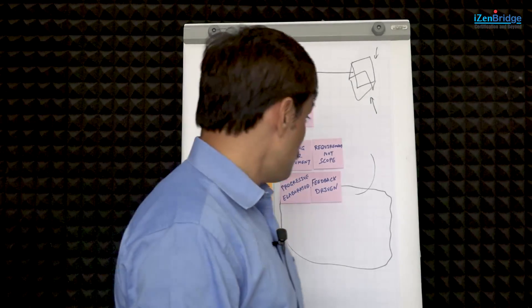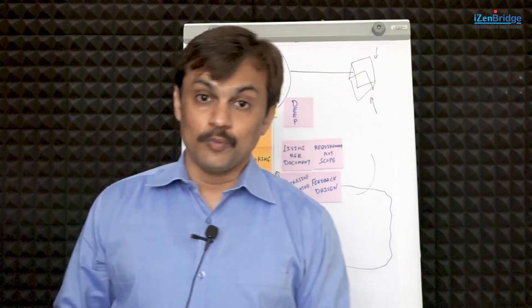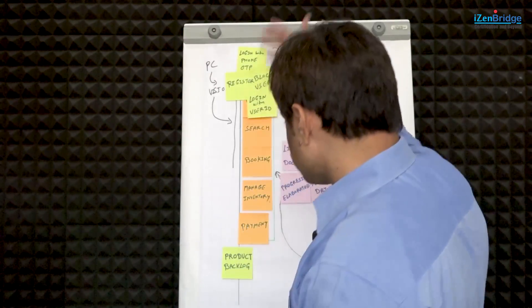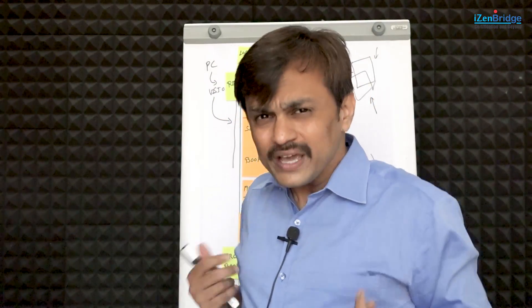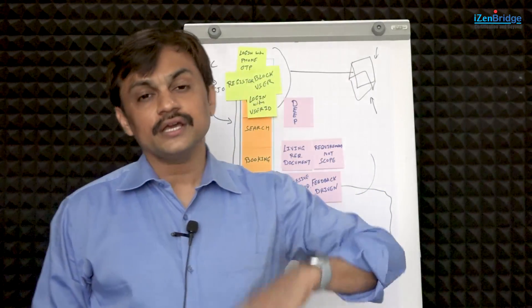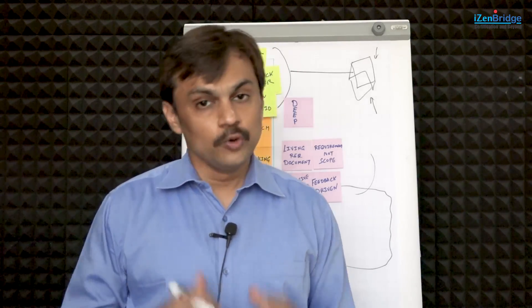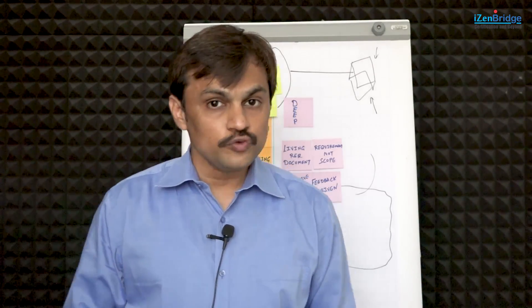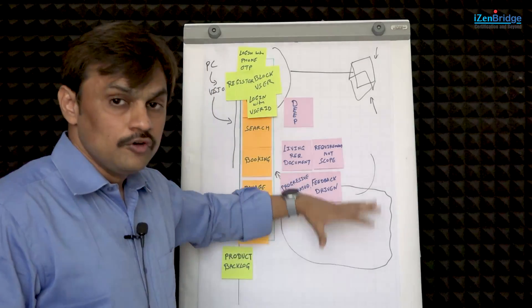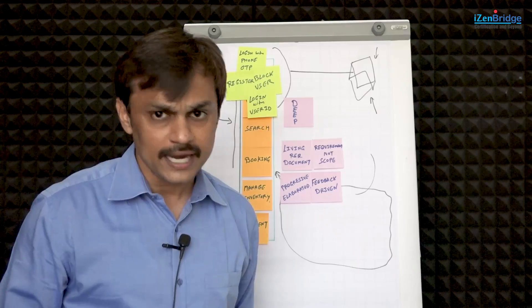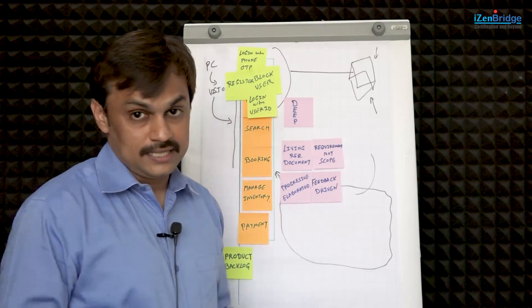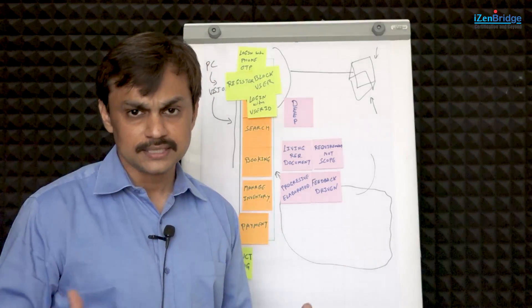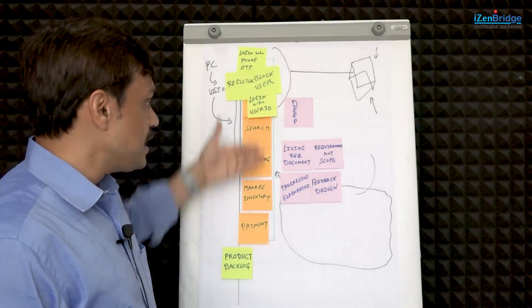Before we close: many of you may have attended Scrum classes and heard that a product owner takes care of the product backlog, and you may be confused about the project manager's role. When dealing with the PMP exam, we can't stick to Scrum roles — you might be working in a hybrid context. There is a possibility that the project manager ensures this whole thing is happening, sometimes by mentoring or coaching the product owner. If the question indicates that role doesn't exist, you might be doing those tasks yourself to ensure we have a prioritized product backlog.